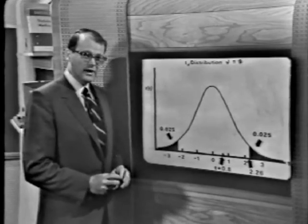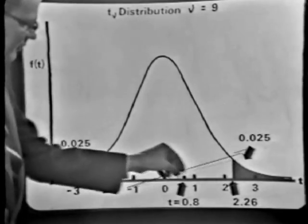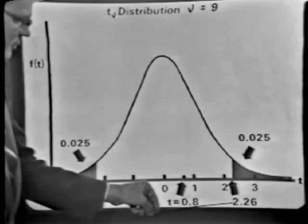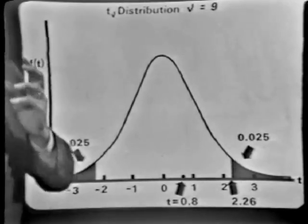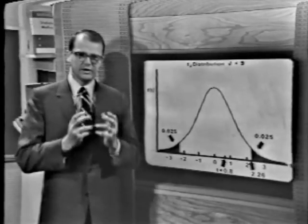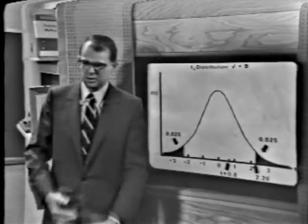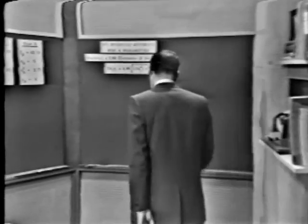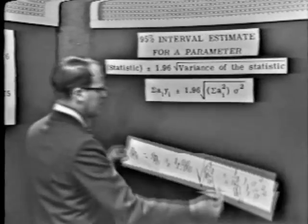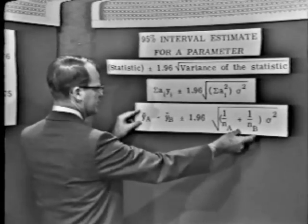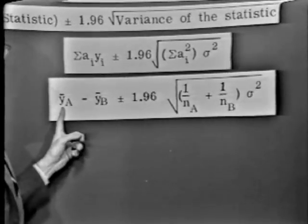Now, what about the critical values of T with 9 degrees of freedom? The critical value of T is that value which leaves 2.5% in the tail of the curve, so those critical values are plus or minus 2.26. Once I know the critical values of T, I can construct an interval estimate for the difference between eta A and eta B. Our statistic is Y-bar A minus Y-bar B, plus or minus a critical value times the square root of the variance of the statistic, giving limits for eta A minus eta B.